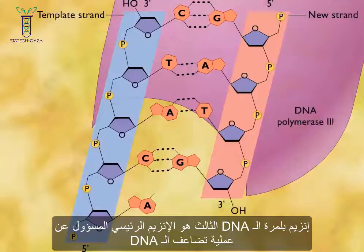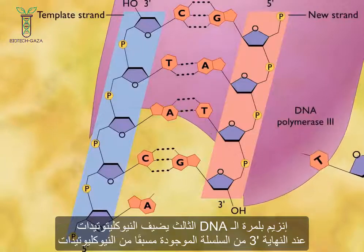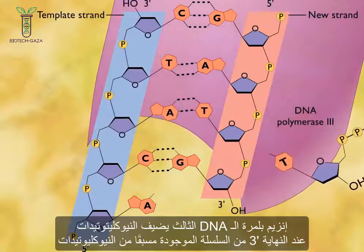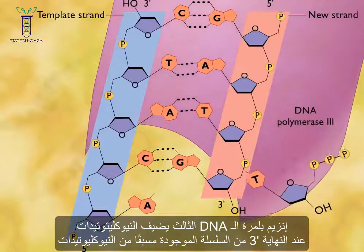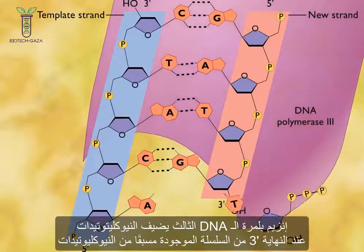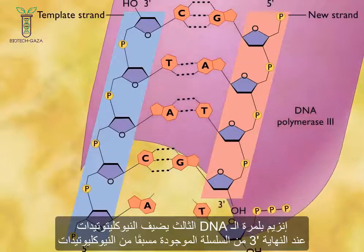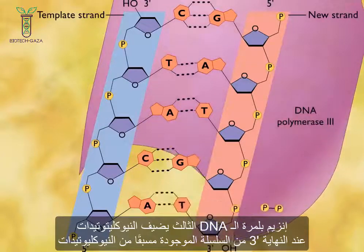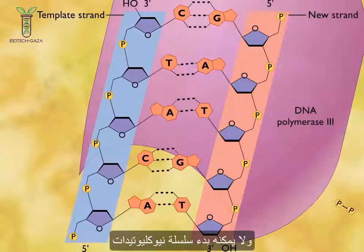DNA polymerase 3 is the major enzyme involved in DNA replication. DNA polymerase 3 can only add a nucleotide to the 3' end of a pre-existing chain of nucleotides, and it cannot initiate a nucleotide chain.